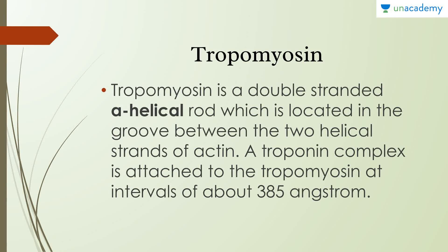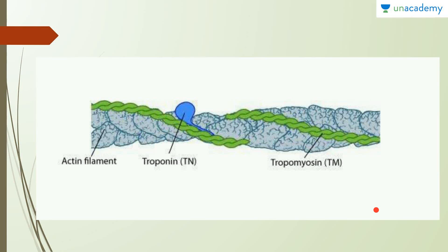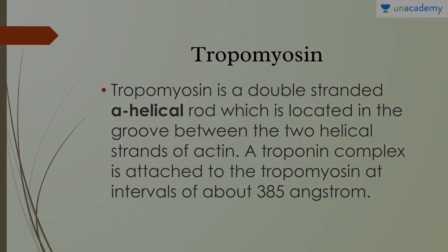Tropomyosin is a double-stranded alpha-helical rod located in the grooves between the two helical strands of actin. A troponin complex is attached to tropomyosin at intervals of about 385 angstroms. In the diagram, each groove contains a tropomyosin chain, which is itself a helical chain, with an alpha chain and a beta chain both coiled around each other.